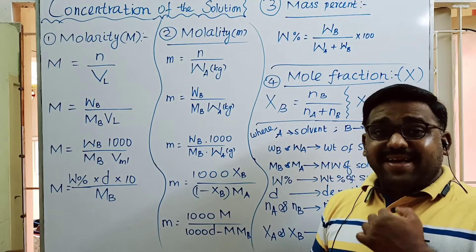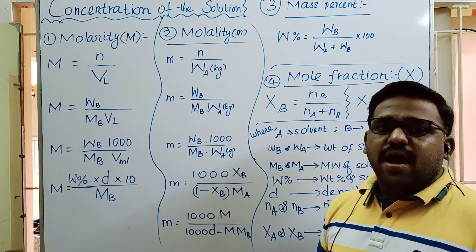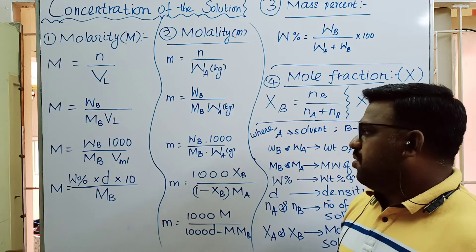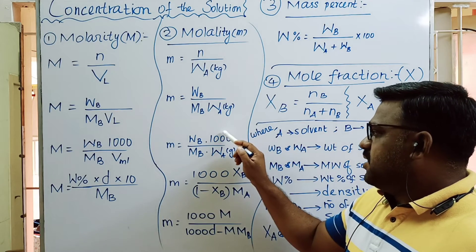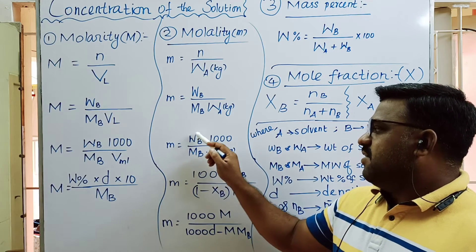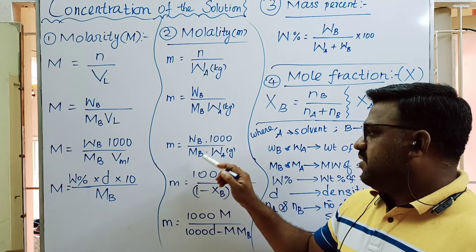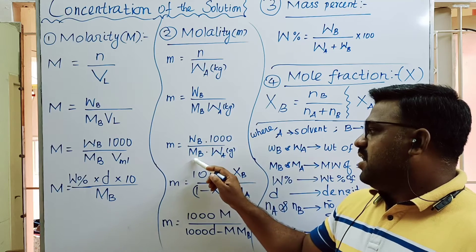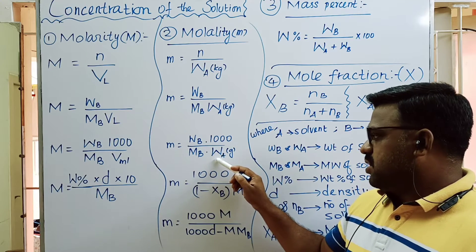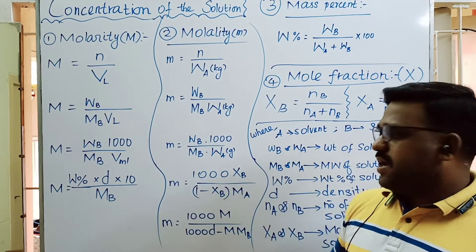If we have weight of solute in grams, we use the formula: weight of solute times 1000, divided by molecular weight of solute times weight of solvent in grams.